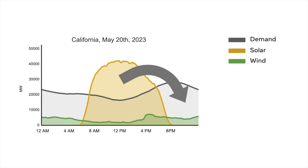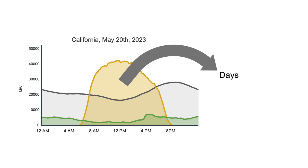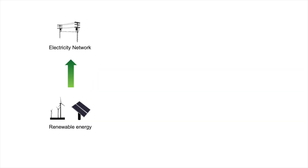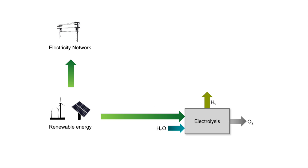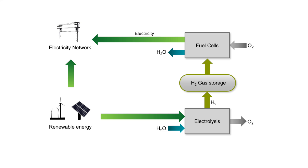And it's not just for transferring energy from one time of the day to another. You can imagine we could have multiple cloudy days or a cloudier season, and we want to transfer energy not just for hours, but for days or weeks or months. So one way to do this is to take the excess renewable energy and use that to split water in a process called electrolysis into hydrogen and oxygen. We could then store the hydrogen, and later when we need additional energy, we can use that hydrogen in a fuel cell to generate electricity.